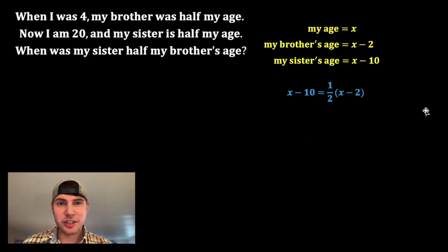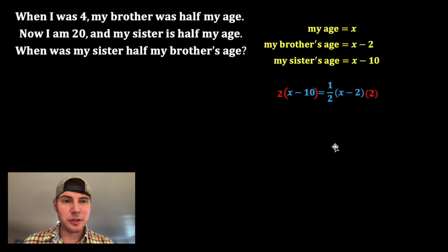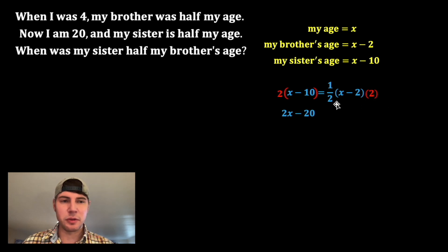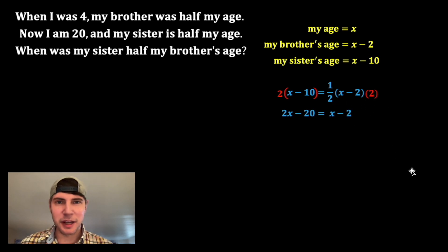So now we just have to solve for X. I'm going to multiply both sides by two. This two distributes, so two times X is 2X, and two times negative 10 is negative 20. On the right-hand side, this two cancels with the one half, so we're left with just X minus two.